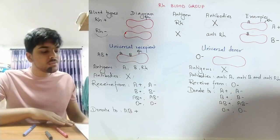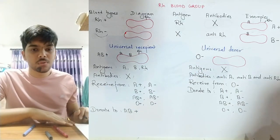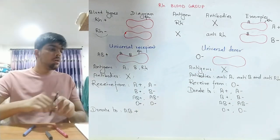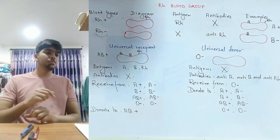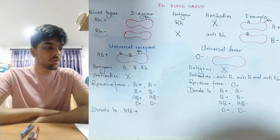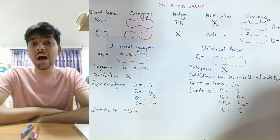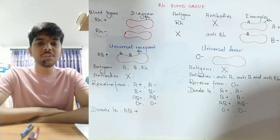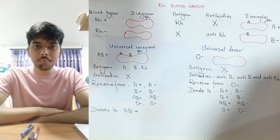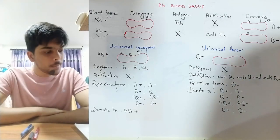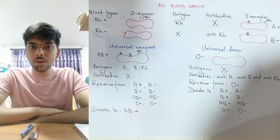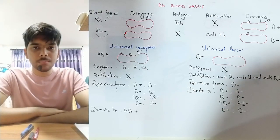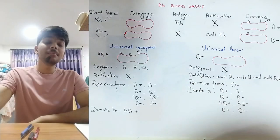That is why O negative is the universal donor. I hope you have understood the concept of Rh blood grouping, as well as the ABO system of blood grouping. In the next video, I'll be covering Rh incompatibility. Bye!